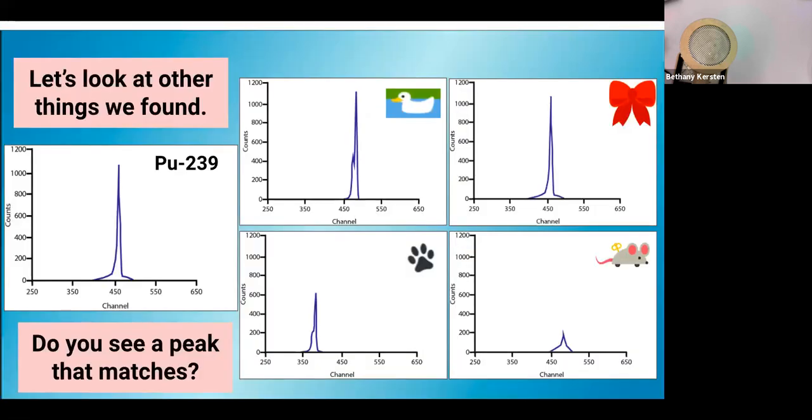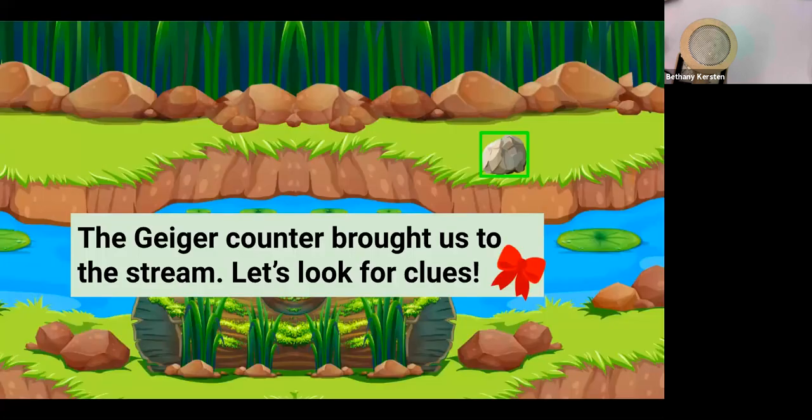So even though we didn't find an object that corresponded to plutonium or our dog Pluto, we know that the spectra is supposed to look like the one on the left for plutonium-239. So which object matches? Yeah. You got it. Yeah. So we know that the bow was touched by Pluto, and so that gives us another hint for us on our path to find Pluto. So if we go back to our trail, we end up going to this stream. We're going to look for clues again to check to see if anything's radioactive, which will let us know that Pluto's been here.